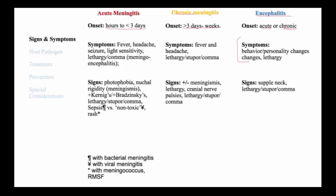The major symptoms of acute meningitis would be fever, headache with light sensitivity, and there might be seizure. Lethargy or progression to coma is not uncommon with severe meningitis due to bacteria, while these are typically absent with viral meningitis. The signs of acute meningitis include photophobia, neck stiffness, combined with what we call meningismus.